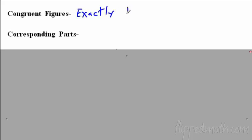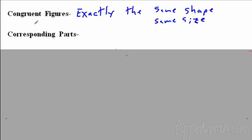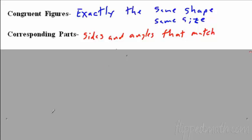Let's look at two more definitions that are hugely important for proofs. Congruent figures must be exactly the same shape and exactly the same size — same shape, same size. We're going to show that triangles, polygons, and other shapes are congruent. What's important about that is corresponding parts — the sides and angles that match up. If two things are congruent, they're going to have parts that correspond and match.